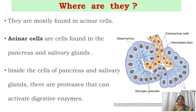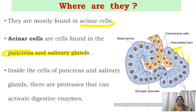Zymogens are mostly found in acinar cells, which are found in the pancreas as well as in the salivary glands. The acinar cells store the inactive forms of enzymes as zymogens. The black dots visible at the apex of each acinar cell are zymogen granules.